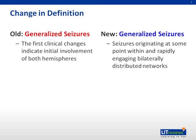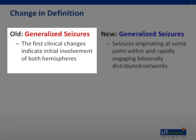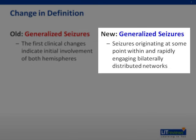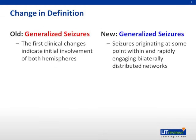Generalized seizures are still called generalized seizures in the new terminology. However, the definition has changed slightly. Previously, it was defined as a seizure where the first changes indicate initial simultaneous involvement of both hemispheres. It is now thought that a generalized seizure originates at some point within the brain, but rapidly engages bilateral networks distributed across both cerebral hemispheres. Hence, the first changes seen clinically or electrographically involve both hemispheres.